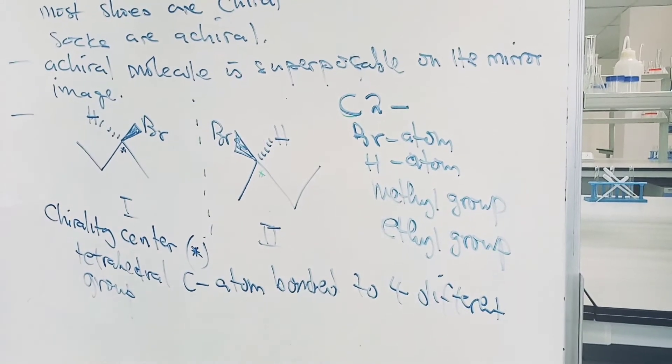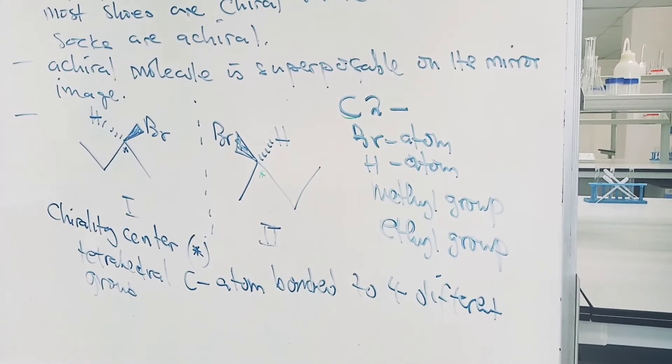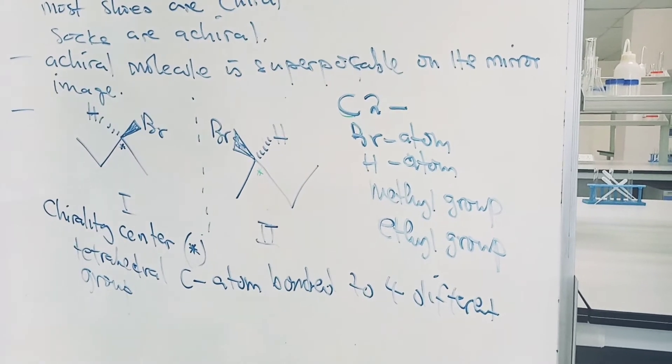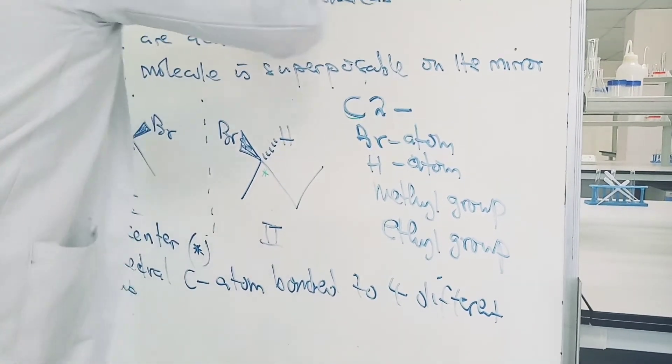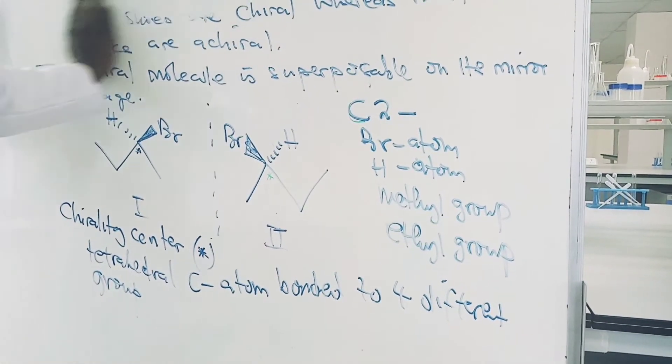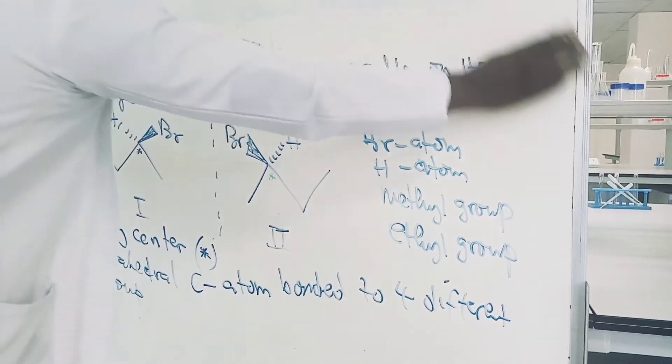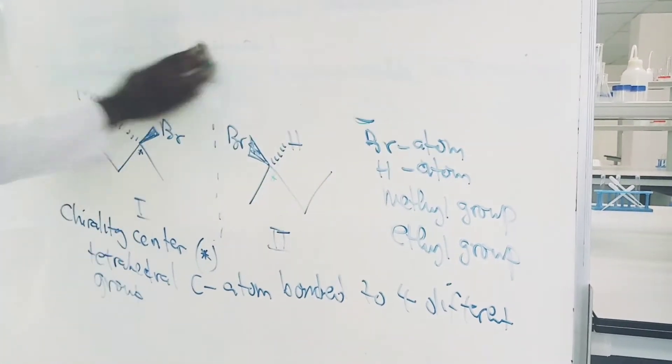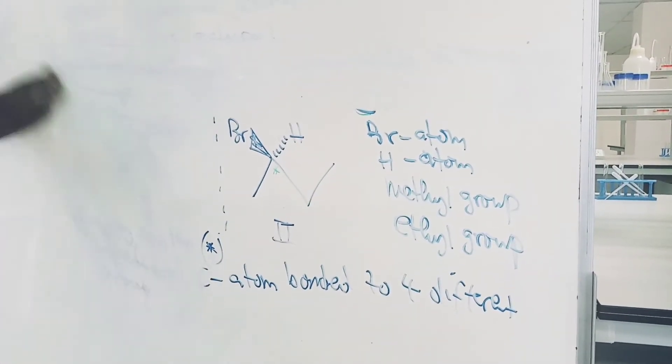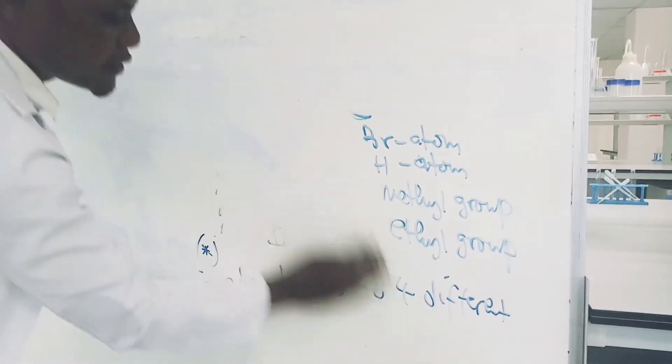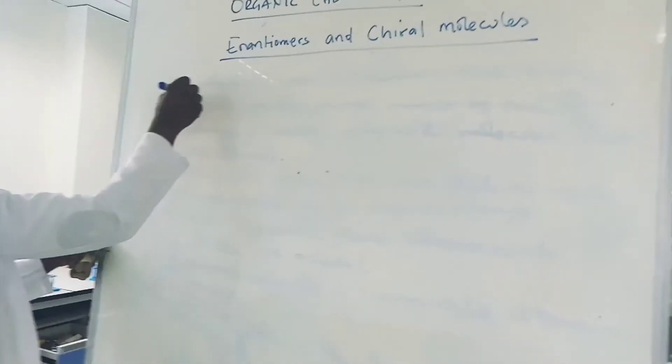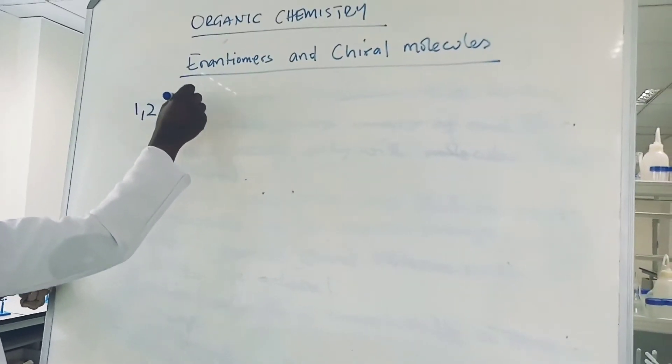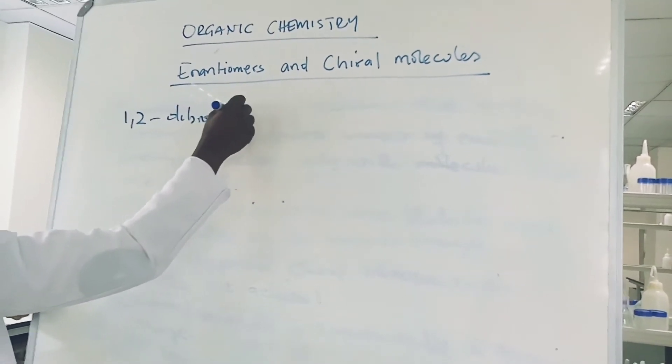So for an achiral molecule, the object and its mirror image are superposable. We shall look at one example or two to see how the achiral molecule will be represented. Let's consider 1,2-dibromoethene.